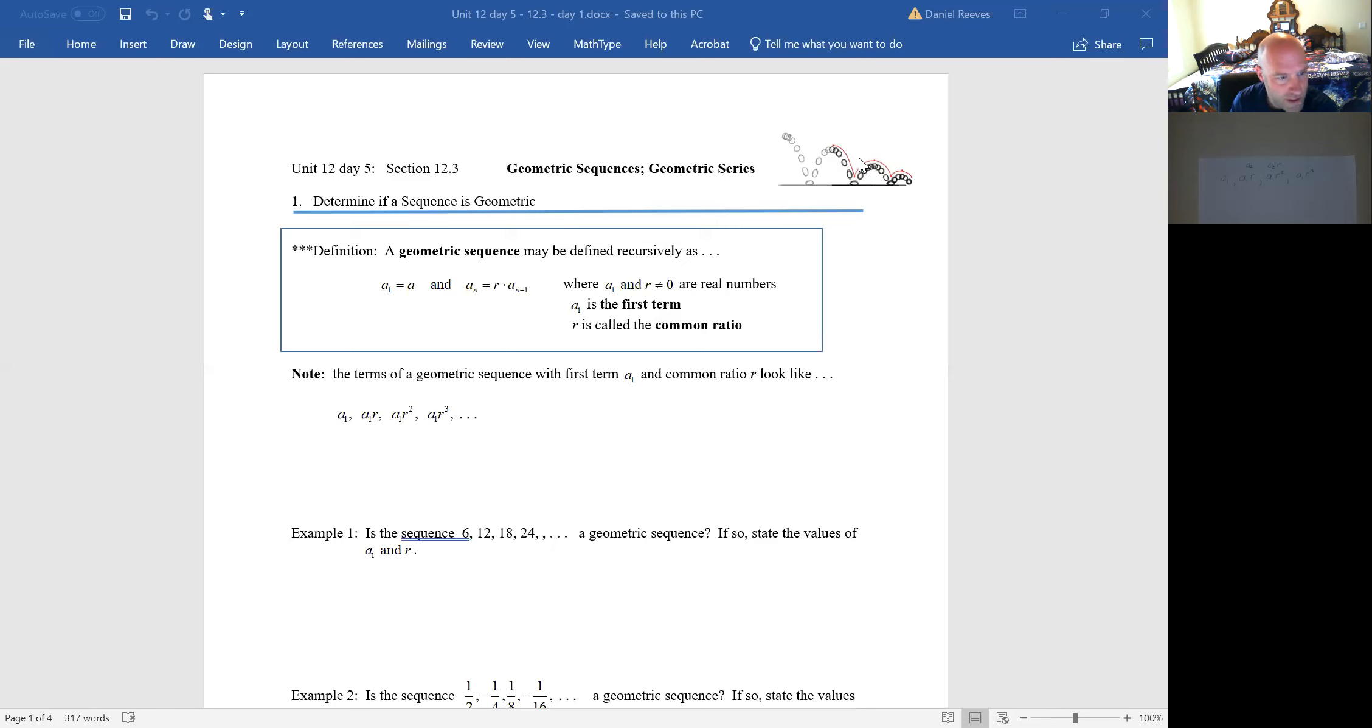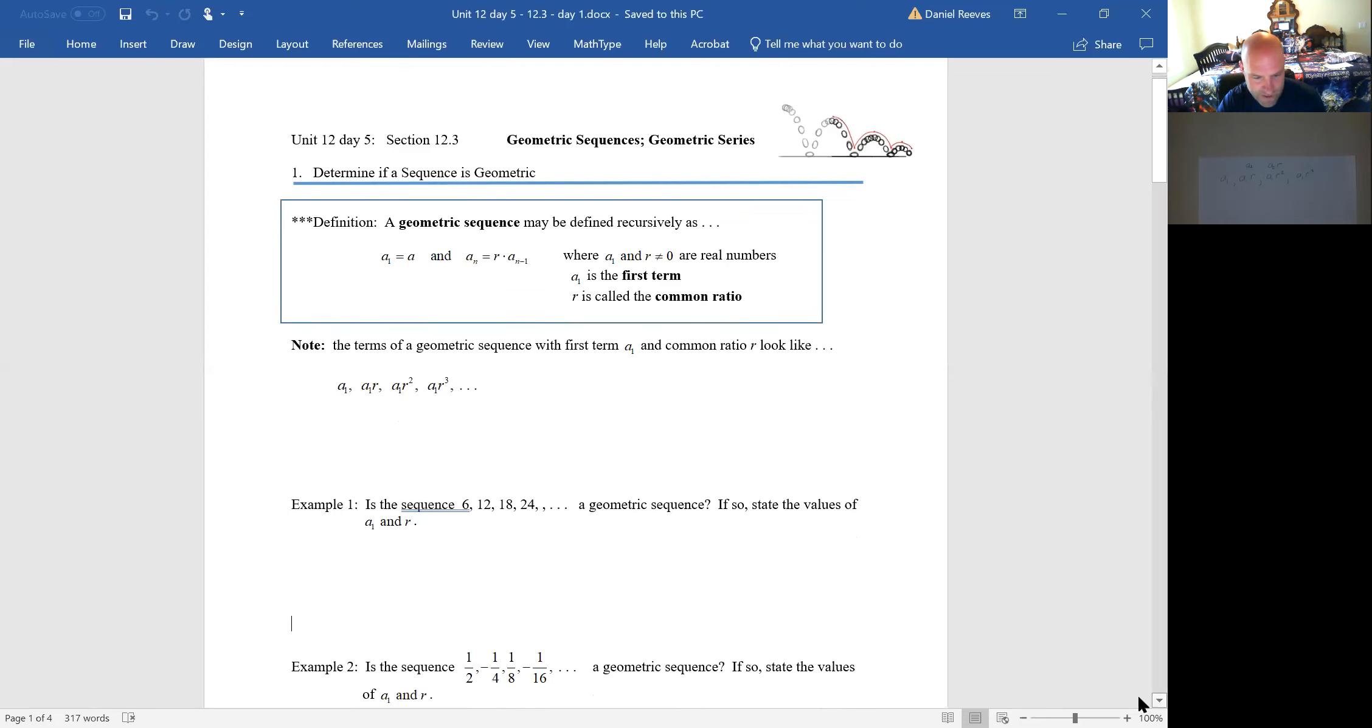Looking at their example, example one is the sequence six, twelve, eighteen, twenty-four, a geometric sequence, and the answer right off the bat is no. To get from six to twelve, you multiply by two, to get from twelve to eighteen, you do not multiply by two. So, no, that does look arithmetic. It seems like you add six every time. Let me move that over so I can scoot this down.